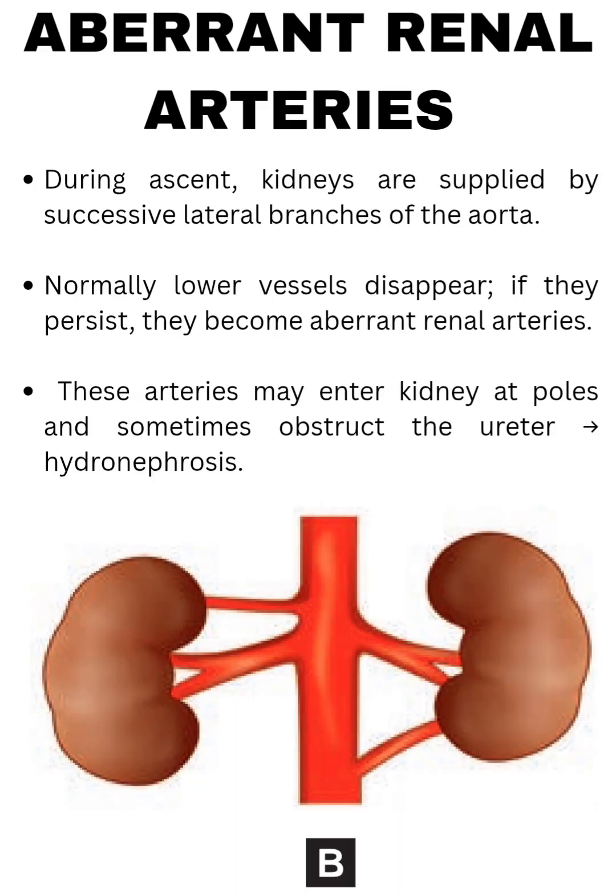Aberrant renal arteries: during ascent, kidneys are supplied by successive lateral branches of the aorta. Normally the lower vessels disappear, but if they persist, they become aberrant renal arteries. These arteries may enter the kidney at the poles and sometimes obstruct the ureter, leading to hydronephrosis.